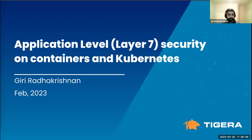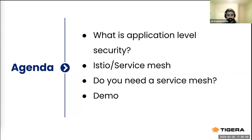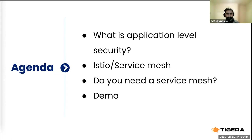We'll look at the agenda. We'll start with application-level security, what the application layer is, what layer 7 is, a little bit of information about Istio and service mesh, what's the deal with service mesh and sidecars with containers. Do you really need a service mesh to help with security and observability for containers? There is a demo at the end. I'll try to do my best showing how Calico can be installed and the nuts and bolts of the solution.